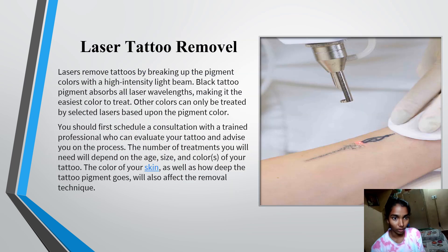Laser Tattoo Removal. Lasers remove tattoos by breaking up the pigment colors with a high intensity light beam. Black tattoo pigment absorbs all laser wavelengths, making it the easiest color to treat. Other colors can only be treated by selected lasers based upon the pigment color. You should first schedule a consultation with a trained professional who can evaluate your tattoo and advise you on the process. The number of treatments needed will depend on the age, size, and colors of your tattoo. The color of your skin as well as how deep the tattoo pigment goes will also affect the removal technique.